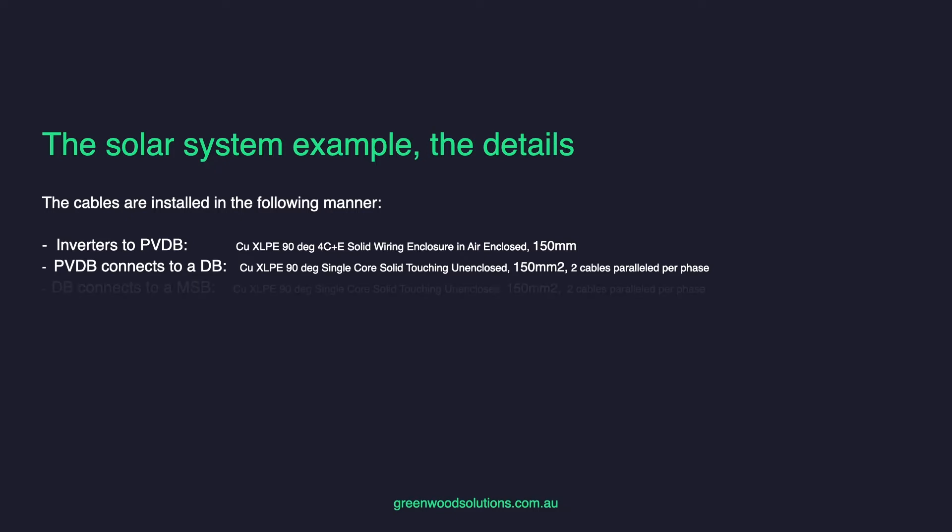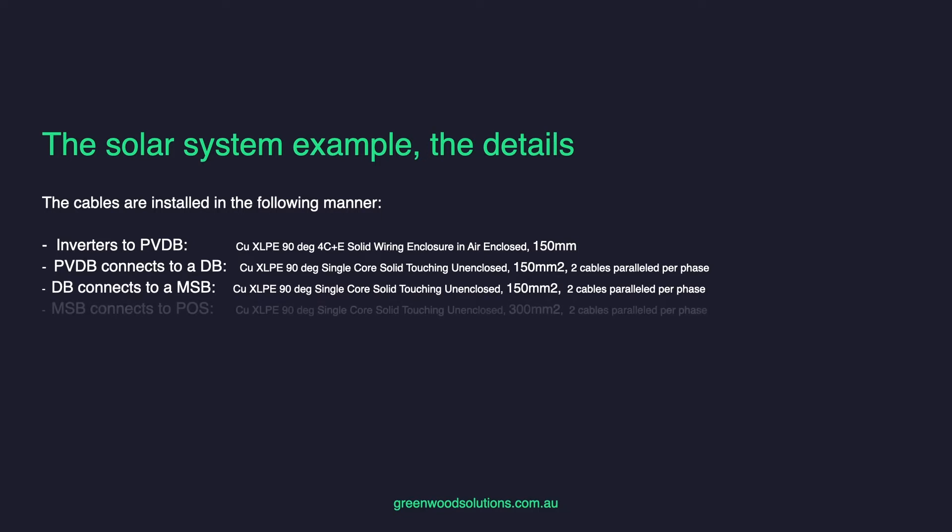The DB connects to the MSB using copper, XLPE, 90 degree, single core, solid, touching, unenclosed, 150mm squared, two cables paralleled per phase. The MSB connects to the point of supply using copper, XLPE, 90 degree, single core, solid, touching, unenclosed, 300mm squared cable, with two cables paralleled per phase.